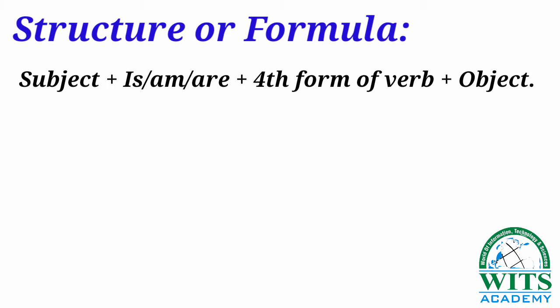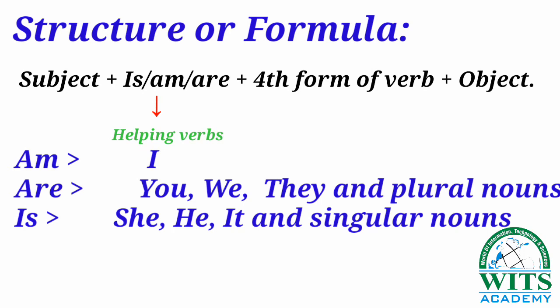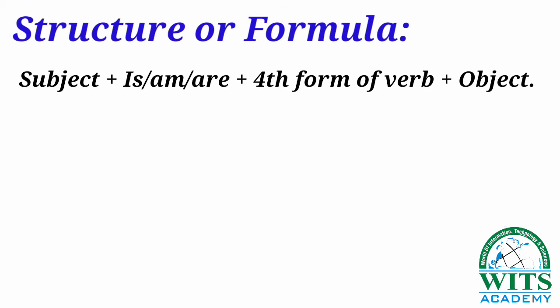First we use the subject, then am/is/are, then the fourth form of the verb, then the object. Am, is, and are are called helping verbs. 'Am' is used with the subject 'I'. 'Are' is used with 'you', 'we', 'they', and plural nouns. 'Is' is used with 'she', 'he', 'it', and singular nouns.